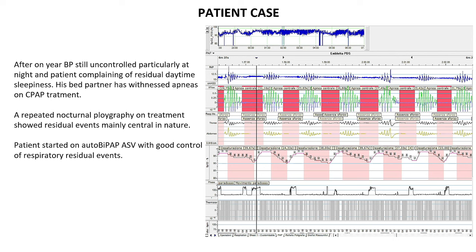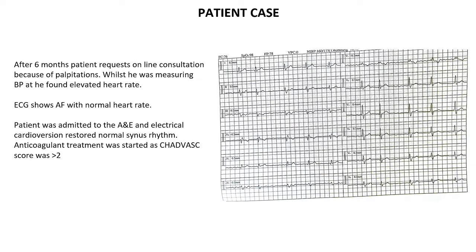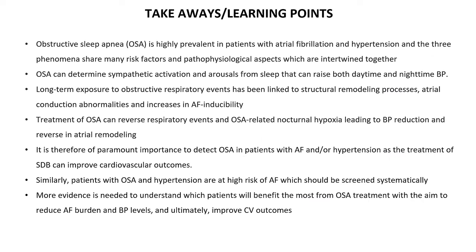Central sleep apnea is a respiratory event different from obstructive sleep apnea that we see very often in patients with cardiovascular comorbidities. We established the patient on a different ventilation — an auto-BiPAP — to control also the central events. Eventually after six months the patient requested a night consultation because whilst he was measuring blood pressure at home he felt palpitations and found on his blood pressure machine that heart rate was elevated. We decided to admit the patient to the hospital — the ECG showed atrial fibrillation with a normal heart rate. The patient underwent cardioversion and normal sinus rhythm was restored, and anticoagulant treatment was started given his elevated cardiovascular risk.